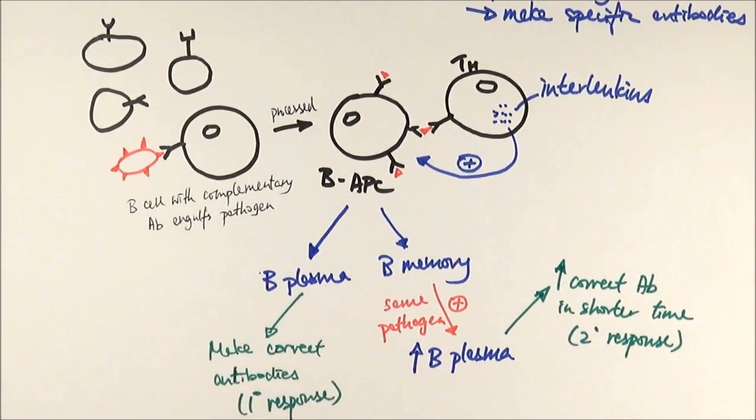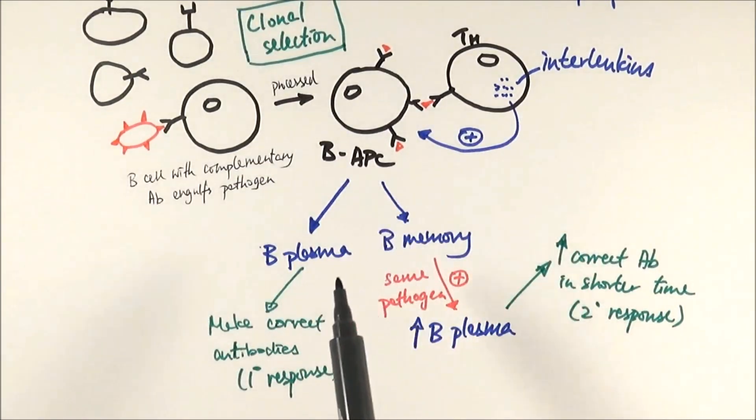Just some keywords here. This bit where we are recognizing and choosing which B cells to use, this is what we call clonal selection. When the interleukins signal it to replicate itself and proliferate, it's what we call clonal expansion.